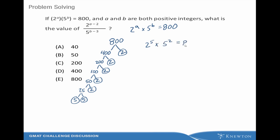So that means A equals 5 and B equals 2. Now we just have to plug those values into our equation and see what happens.